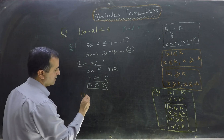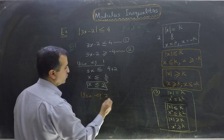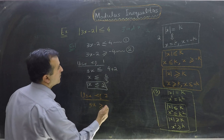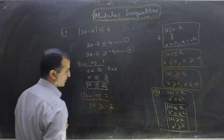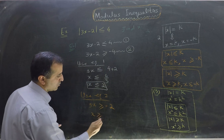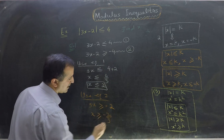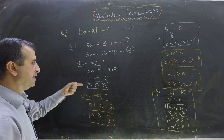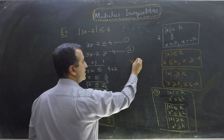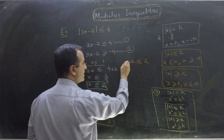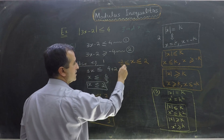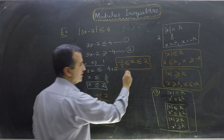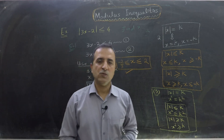Now using equation 2: 3x is greater than or equal to minus 4 plus 2, so 3x is greater than or equal to minus 2, giving x is greater than or equal to minus 2 over 3. Combining both results, we write: x is greater than or equal to minus 2 over 3 and x is less than or equal to 2. This is our answer.